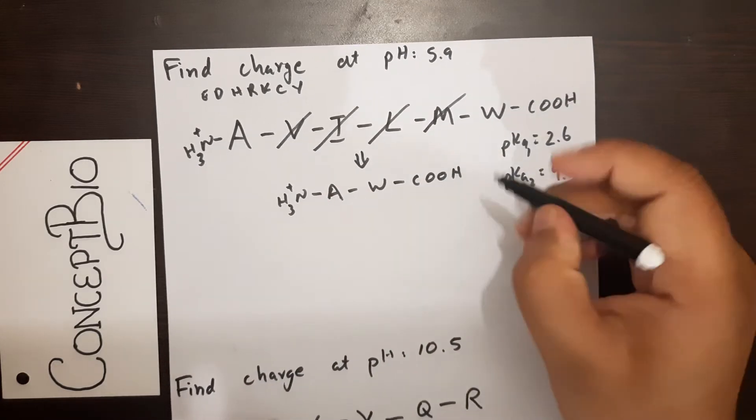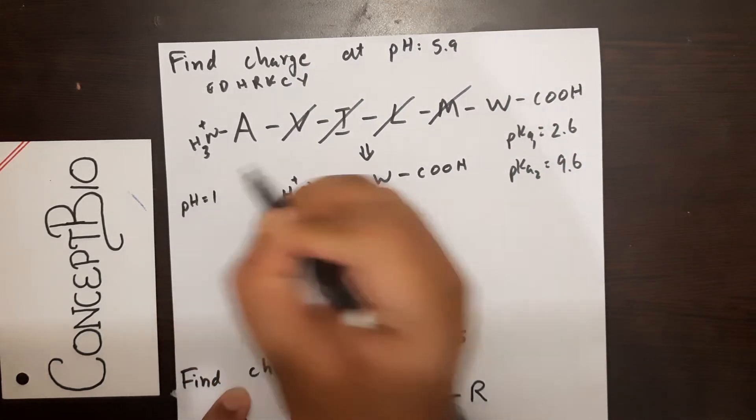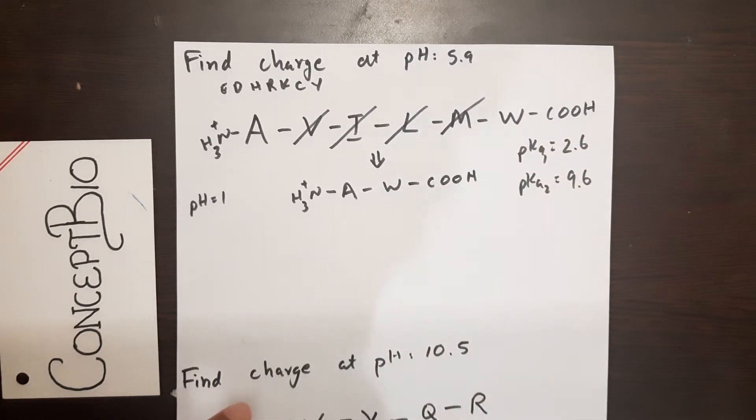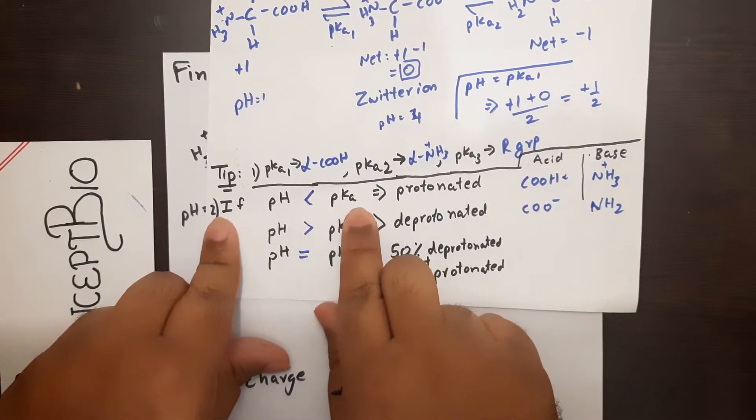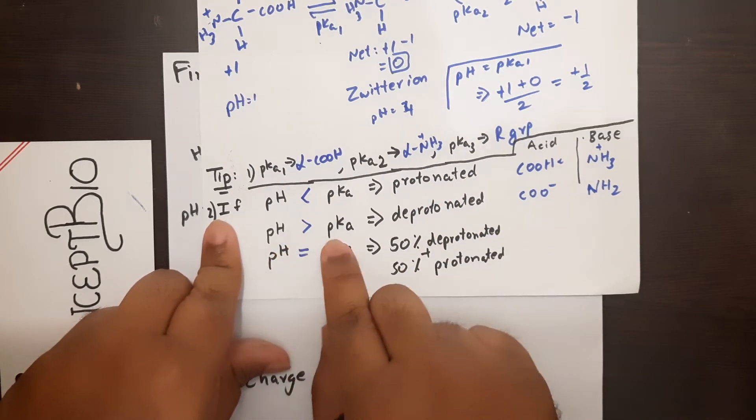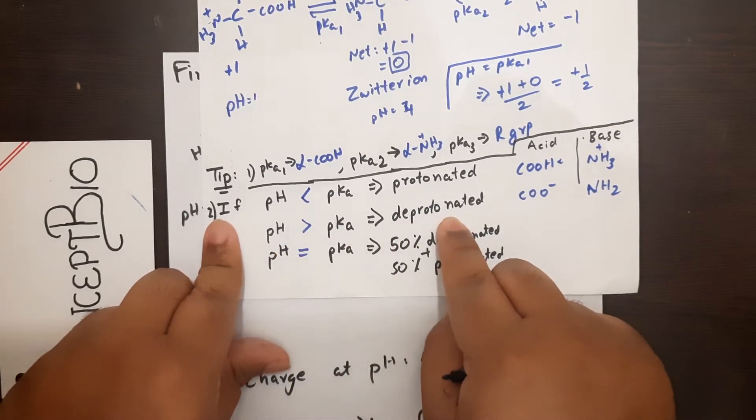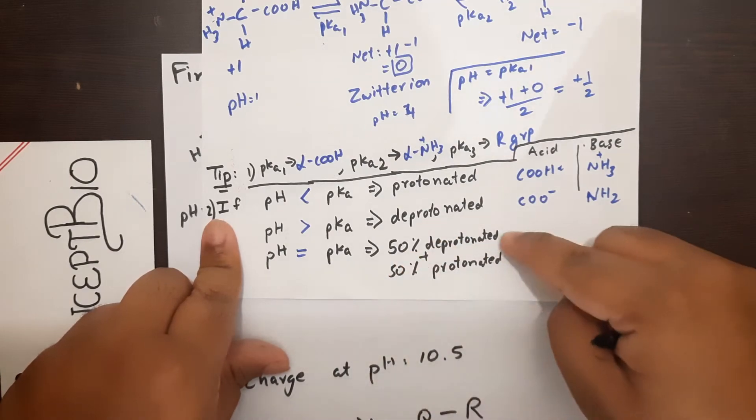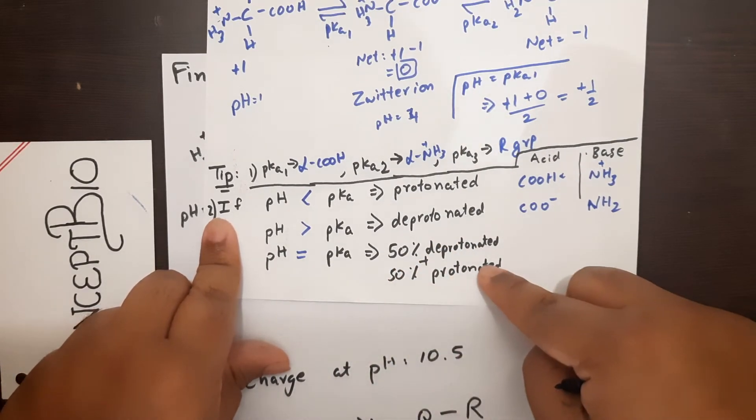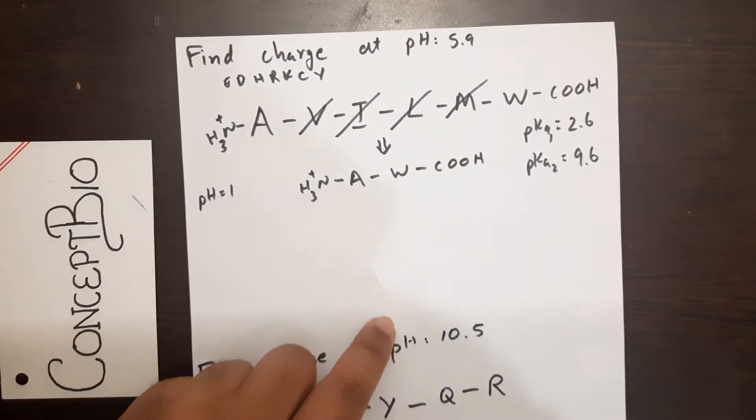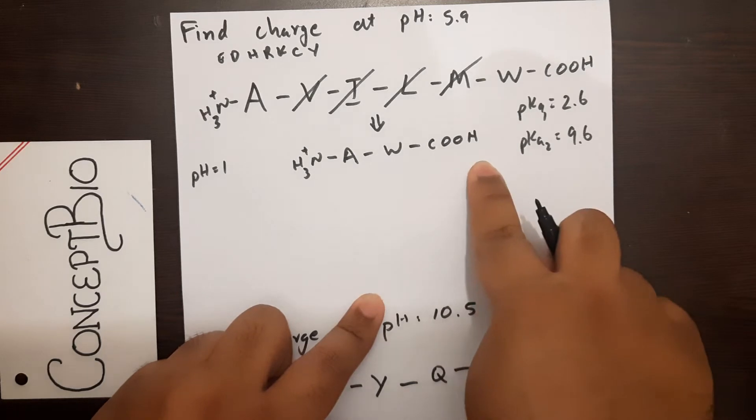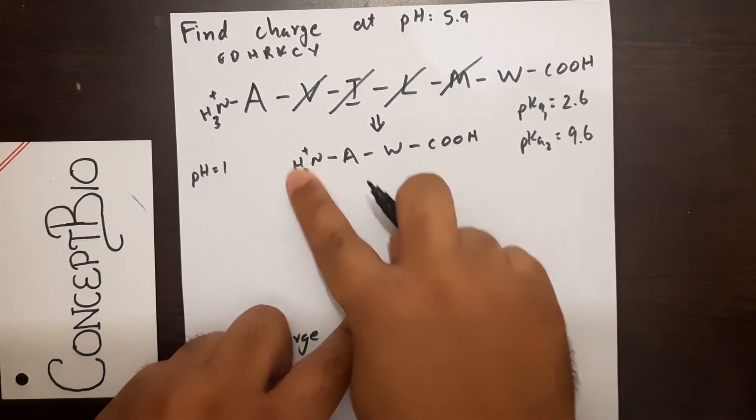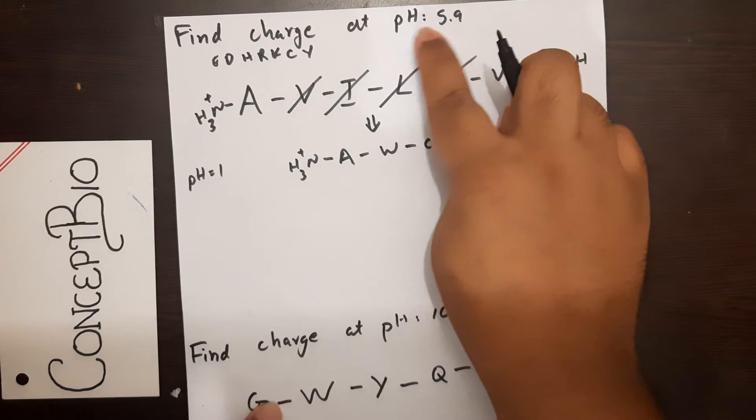Assuming this is at pH equals 1, everything is in its protonated stage, so the net charge here is just plus 1 from the alpha amino group. Now we need it at pH equals 5.9. You have to know this criteria: if pH is less than pKa, protonation occurs; pH greater than pKa, deprotonation occurs; and if pH equals pKa, it's 50% deprotonated and 50% protonated.